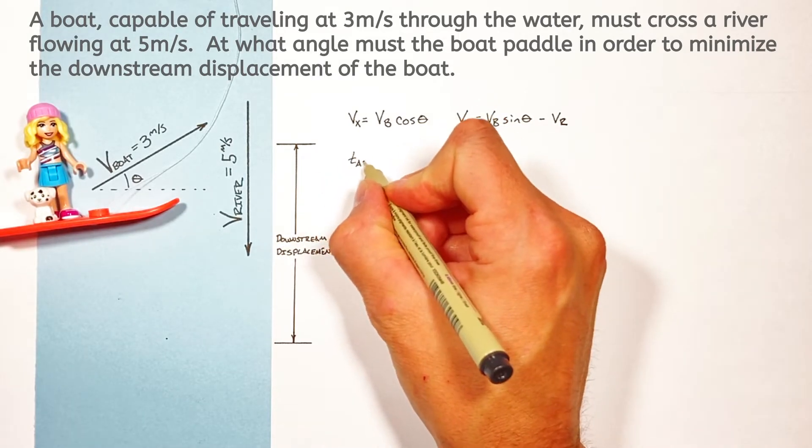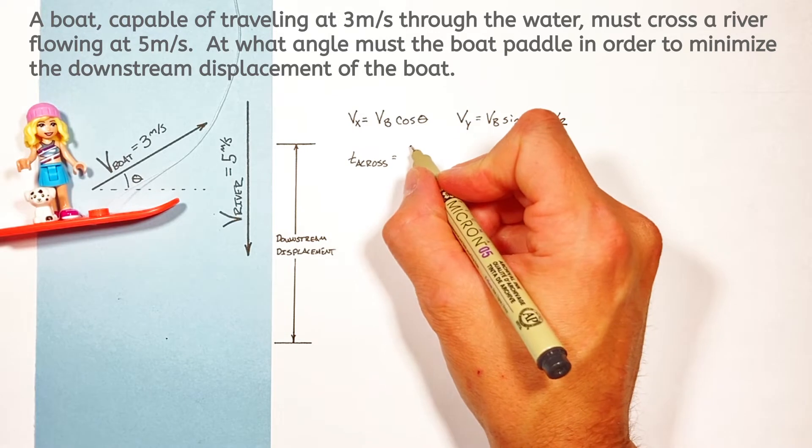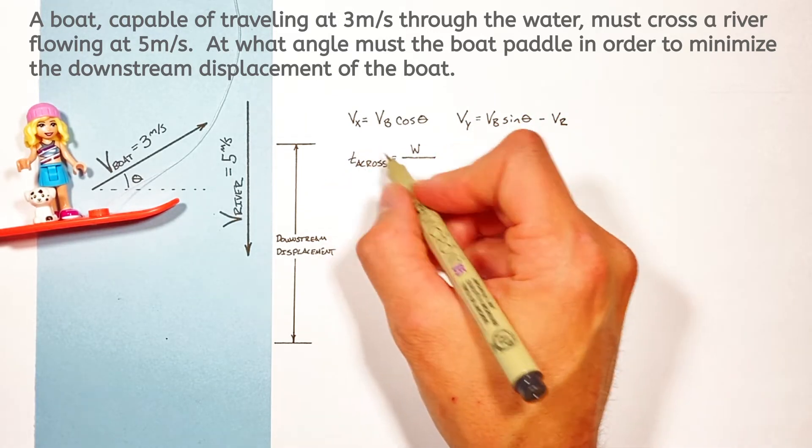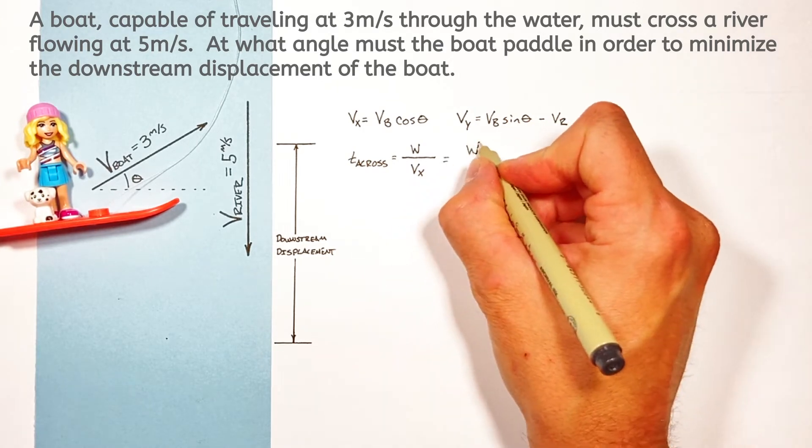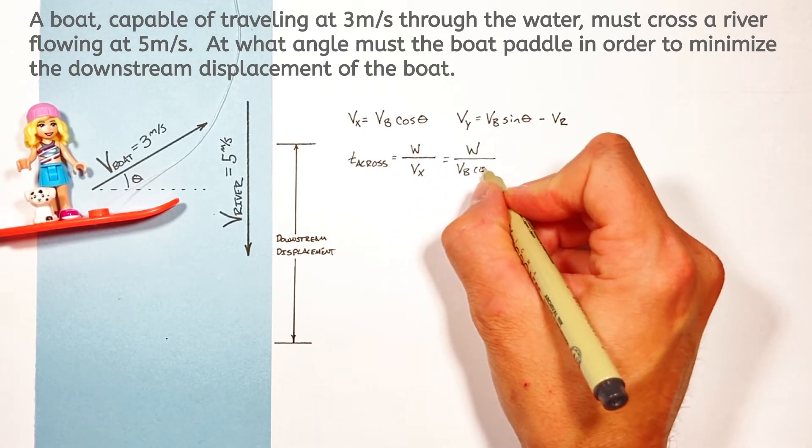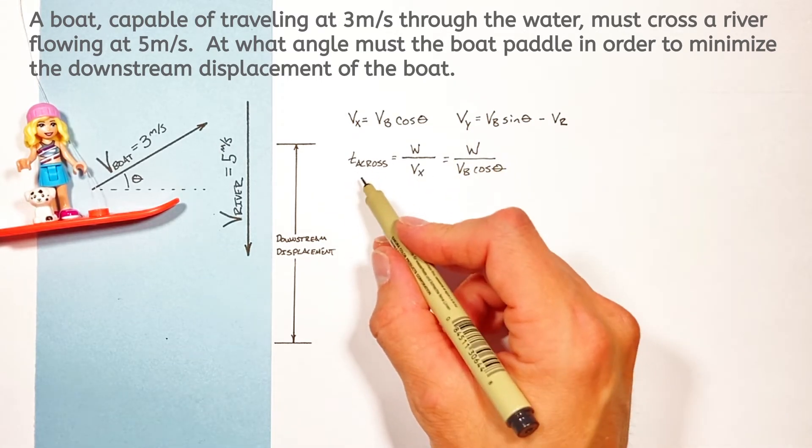Now like I mentioned the time for the boat to cross the river is gonna come into play here. Now that time is gonna be given by the width of the river divided by the horizontal velocity. So subbing this term in up here we'll get W over VB cosine theta. And even though we know this value for theta we have an expression for the time.